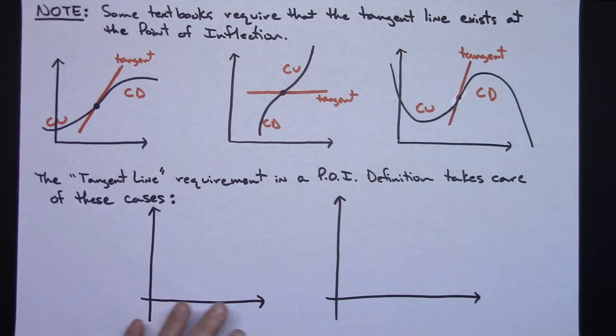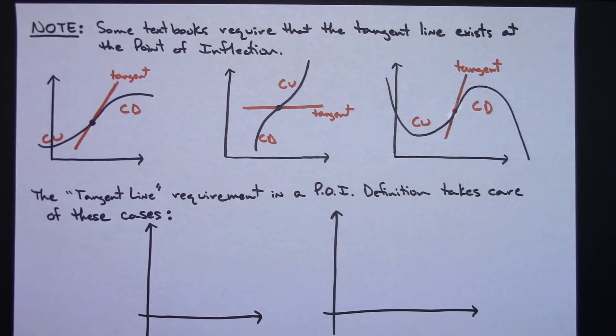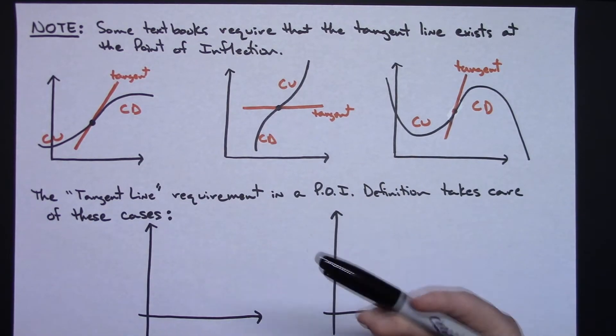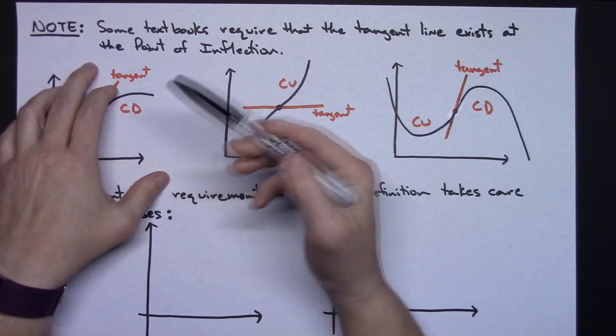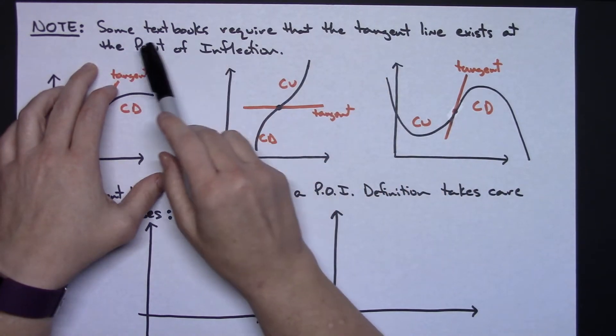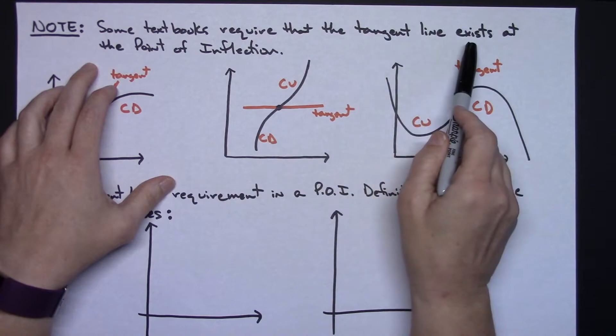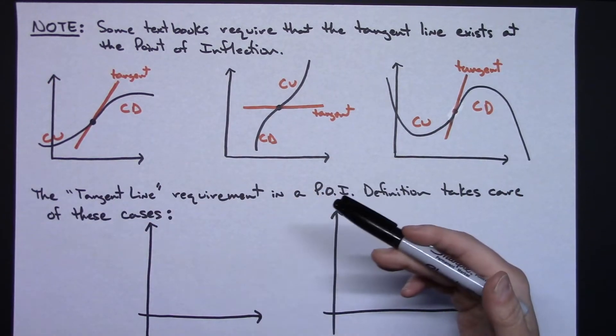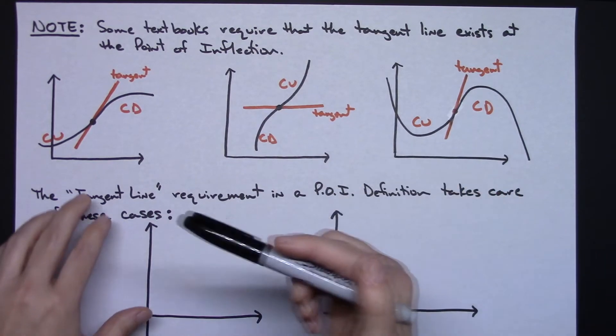Now a little bit more. I do want to make a special note here. I teach out of a Larson textbook, and in that particular textbook, along with some others, some textbooks require that the tangent line exists at the point of inflection. So they just kind of throw that into that definition of point of inflection.